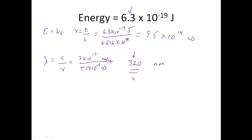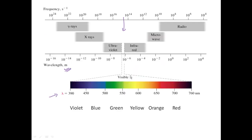What is 320 nanometers? Well, if I look at this chart down here, I'll notice that 320 nanometers is about there. It's off the chart, but only a little bit. So this is going to be ultraviolet light, which is slightly more powerful than violet light.